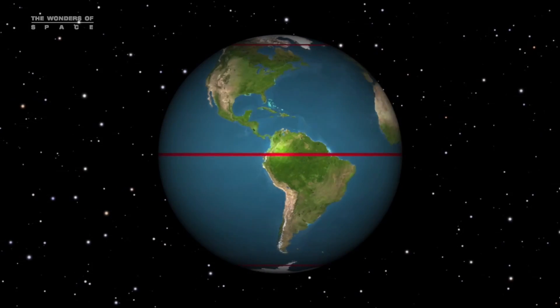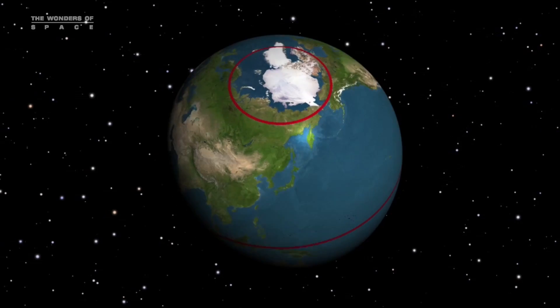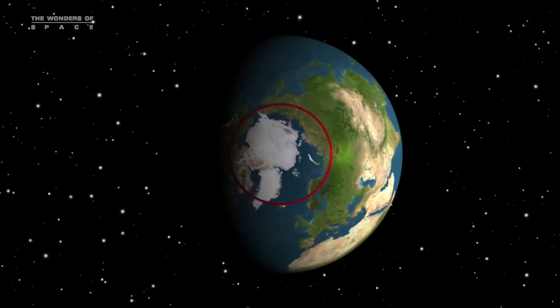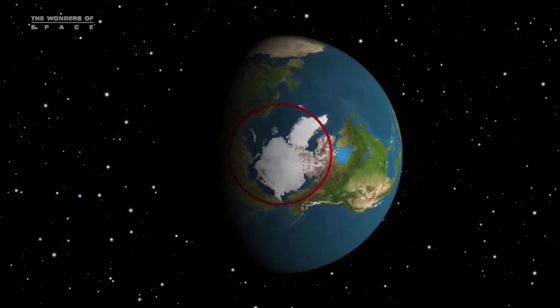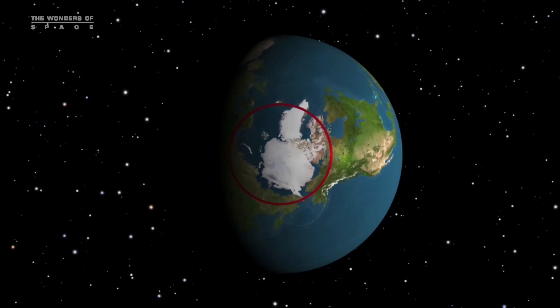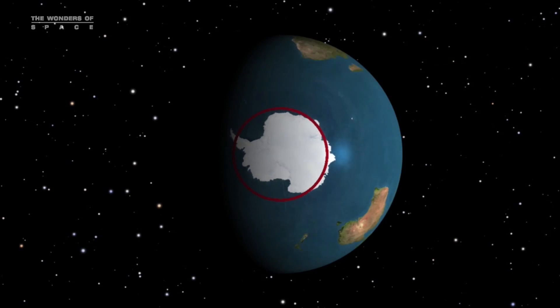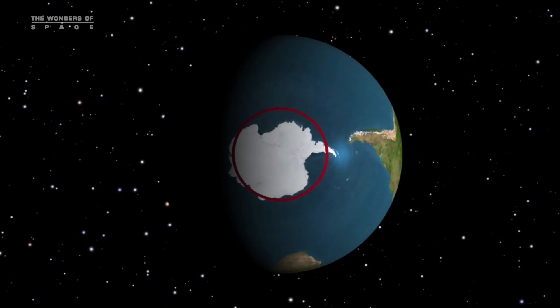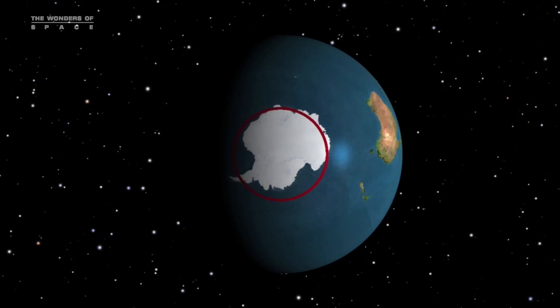In the northern hemisphere, the Arctic Circle is the southernmost latitude where 24-hour daylight can occur at least one day in a year. In the southern hemisphere, the Antarctic Circle is the northernmost latitude where 24-hour daylight can occur at least one day in a year.